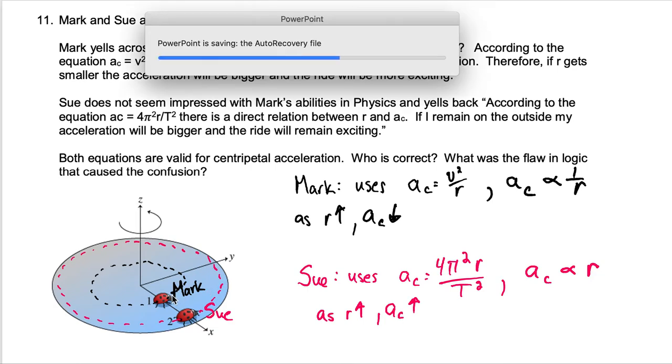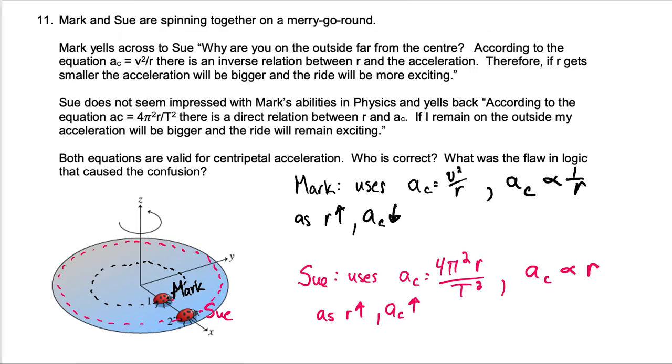Mark of course is closer to the center and he will only go along that smaller circle path in the middle. The key to both of these people is they're both on the same ride and the time it takes to go round for both is the same. They both will experience the same period of rotation because they're on the same ride.